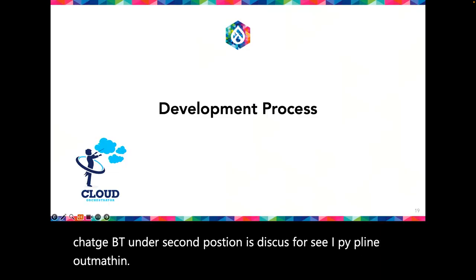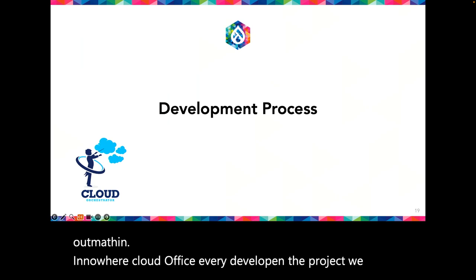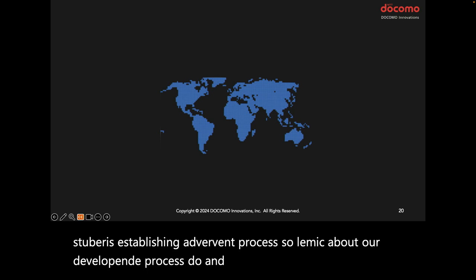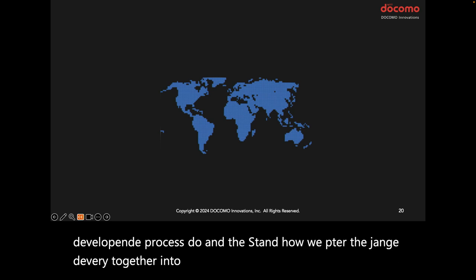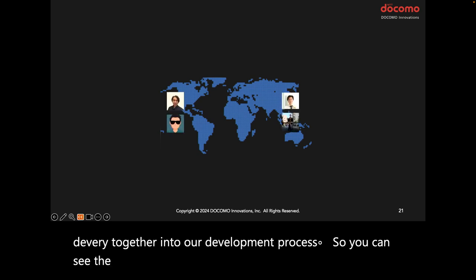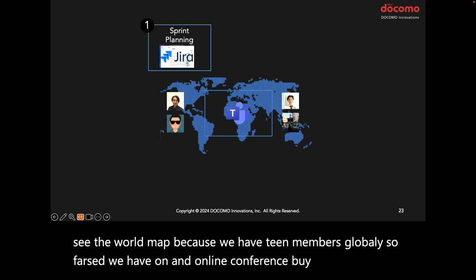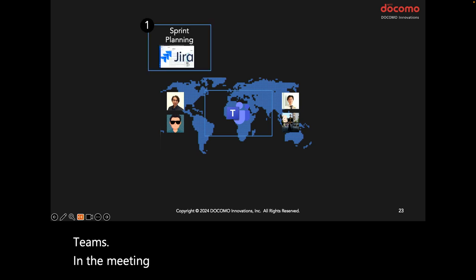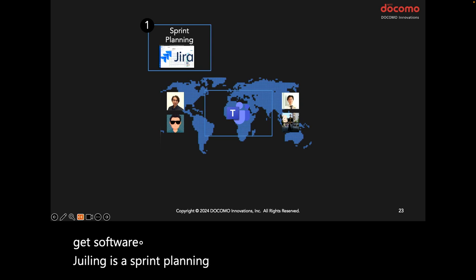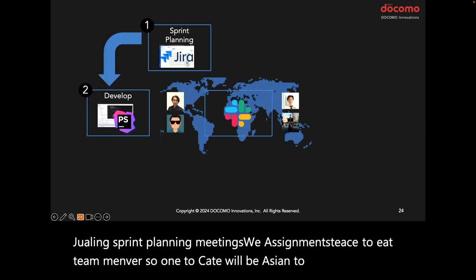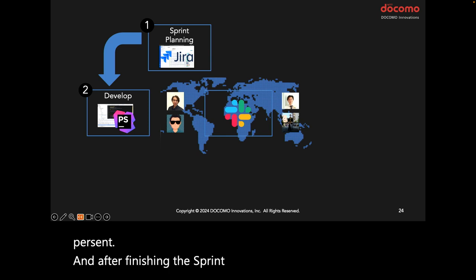In our cloud orchestrator development project, we are establishing a development process. We have team members globally, so we hold online conferences using Microsoft Teams. In those meetings, we discuss the sprint backlog using Jira software. During the sprint planning meeting, we assign each Jira ticket to one team member. After finishing the sprint meeting, we start to develop, and we use Slack to communicate during development.